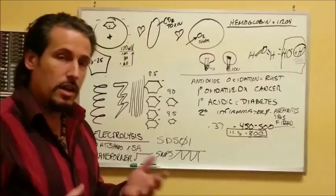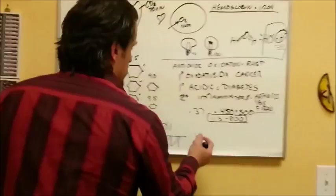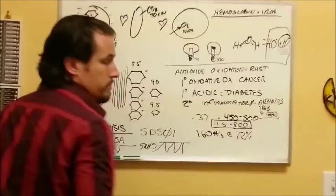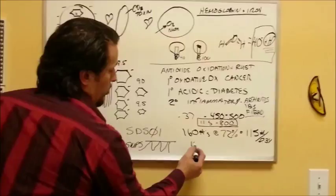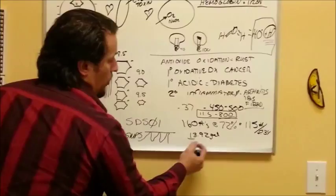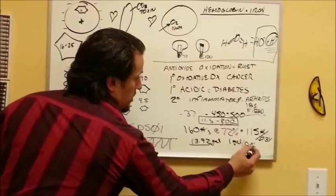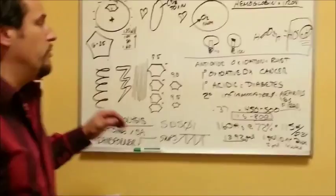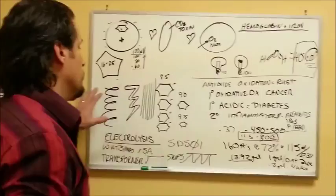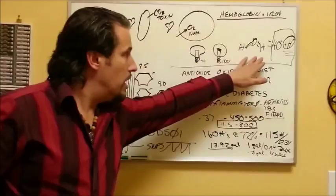For instance, and I use these numbers because they work easy. If somebody weighs 160 pounds and they are 72% water, that means 115 pounds of them is water. If there's 8.34 pounds per gallon of water, they are approximately 13.92 gallons of water. Well, if you drink one gallon a day, it's going to take you two weeks to rehydrate. If you drink a half gallon, it's going to take you four weeks. So, the ability to flush the cells, rehydrate 72% of the entire organism with high energy water, getting the antioxidants and the bioavailable oxygen directly into the cells is simply the fastest means to get the person on the road to health and wellness.